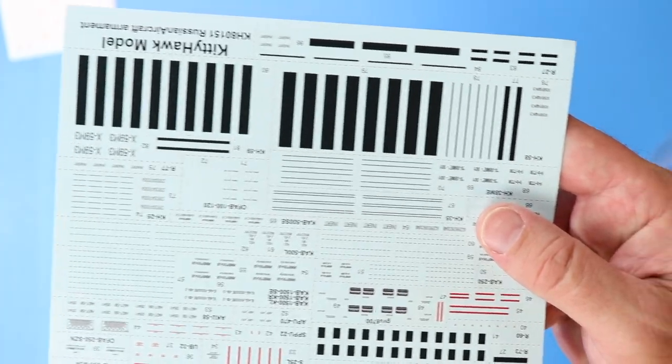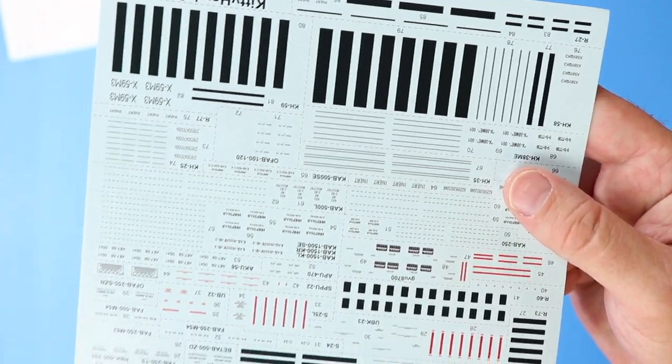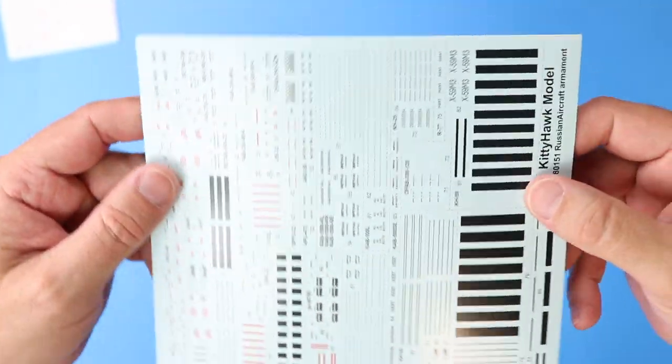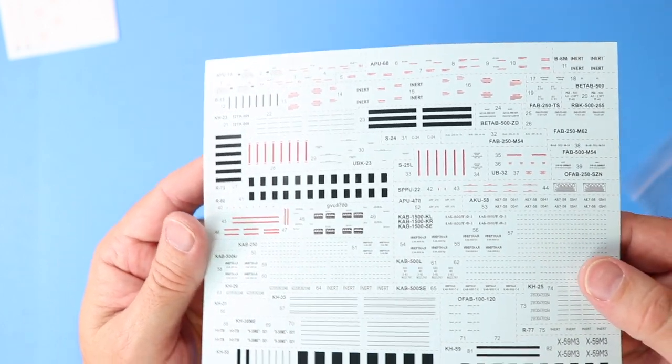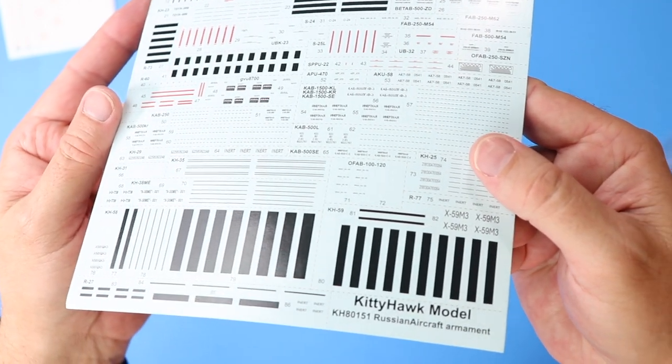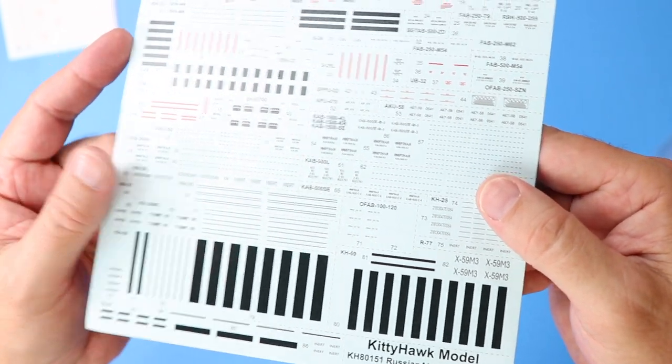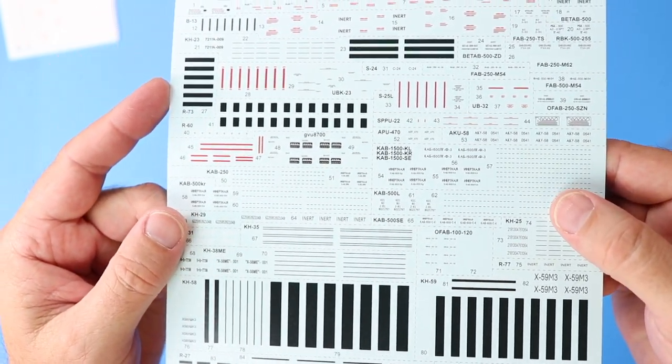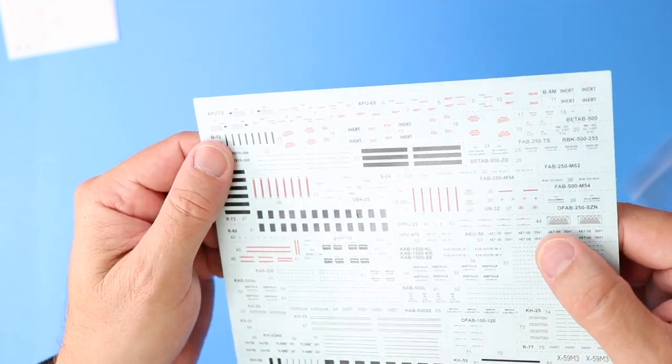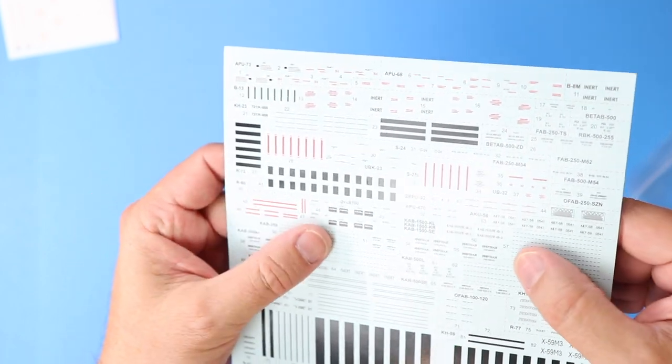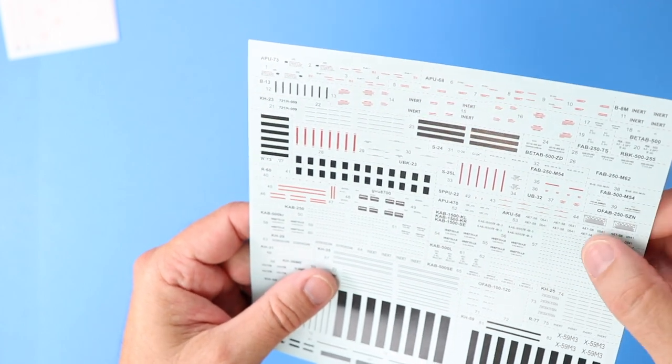Let's see. Stencils. Next one. All about weapons markings. All of those sprues of weapons and we just have a ton of weapons markings. Again, nicely done. The carrier film is very, very clear. They're fairly thin. I think with a little decal set those are going to go down and look spectacular.